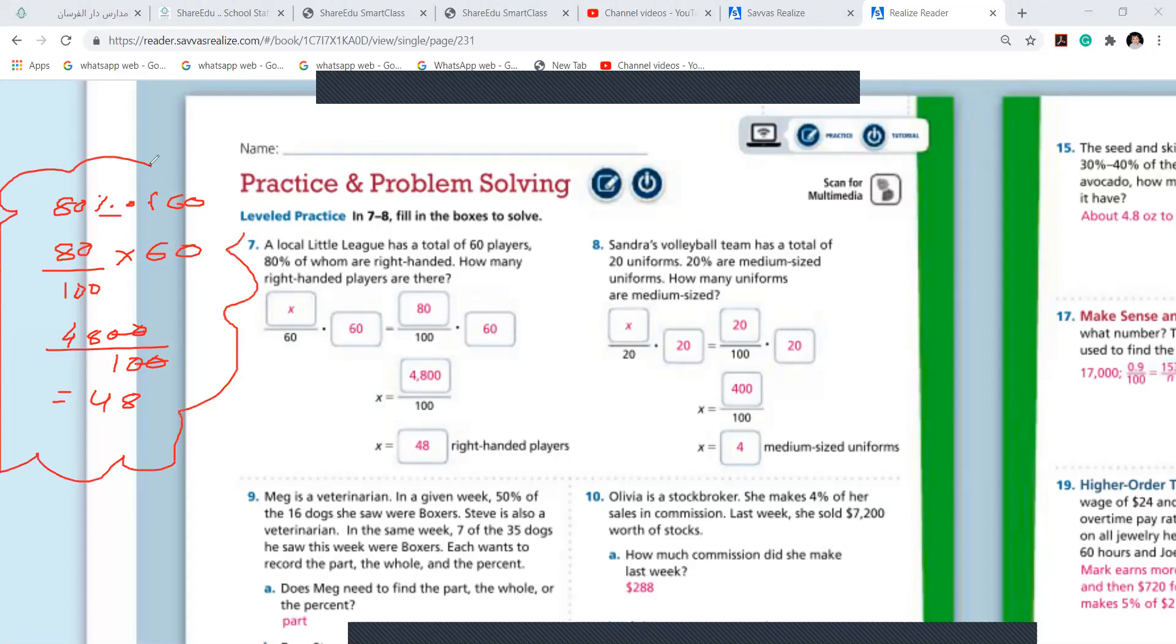Please fill up these boxes and you can do the working on the side or in the copybook, writing the question number and page number. Girls, with the question you can easily know that 80% of whom means 60 players, 80% of 60. They are right-handed. 80% means 80 over 100 of 60 means times 60.